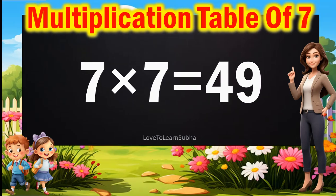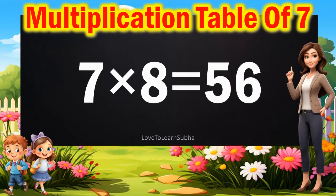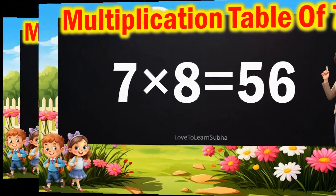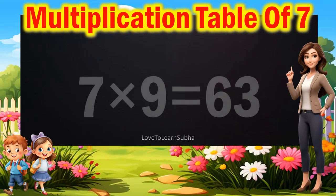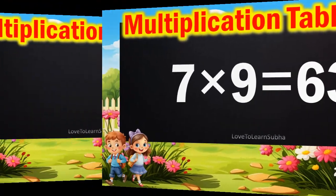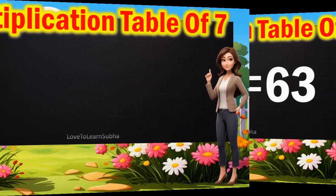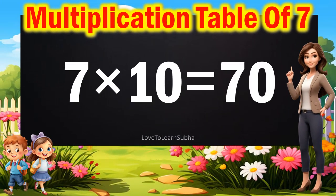7 eights are 56, 7 nines are 63, 7 tens are 70.